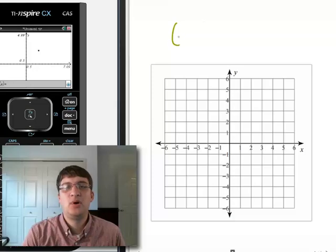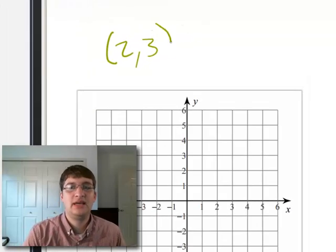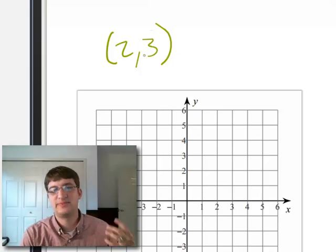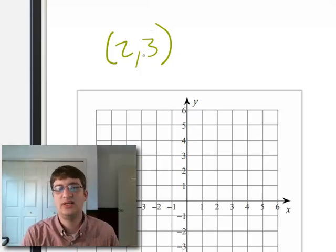All right. I have a point two comma three and I want to go ahead and plot that point on the graph. That's one of the most basic things you can do when graphing.